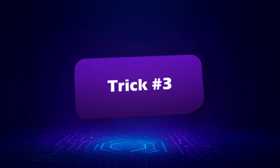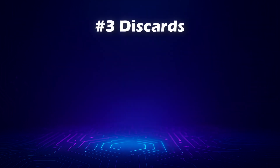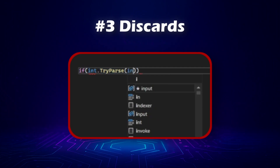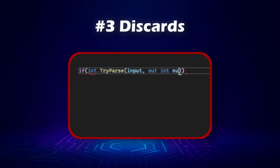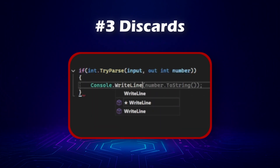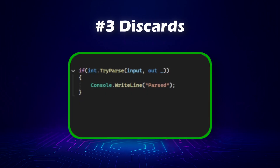The next trick is called discards. This is super useful when you don't care about a value that a method returns. For example, here we're creating a variable called `number` that we never actually use — that's unnecessary. We can solve this problem using a discard. The underscore tells the compiler: I don't need this value.